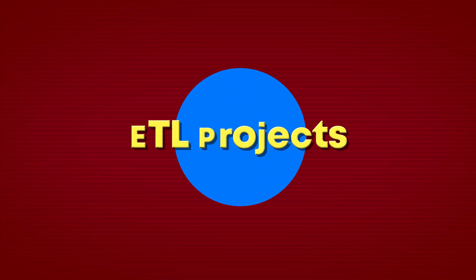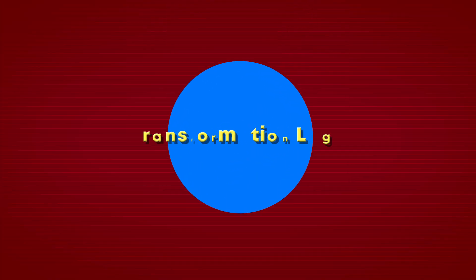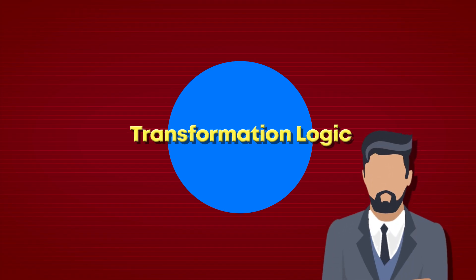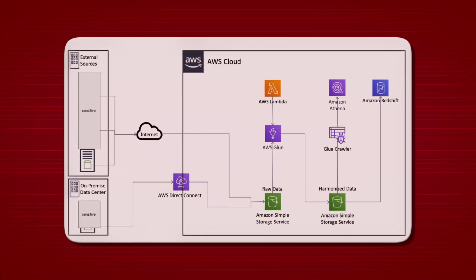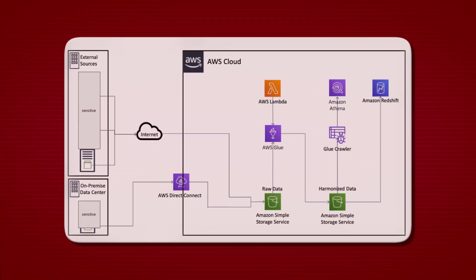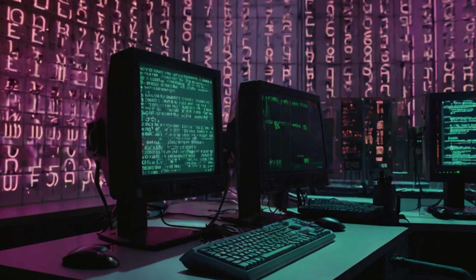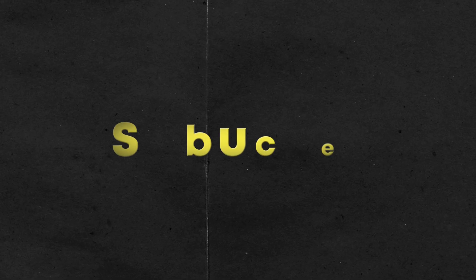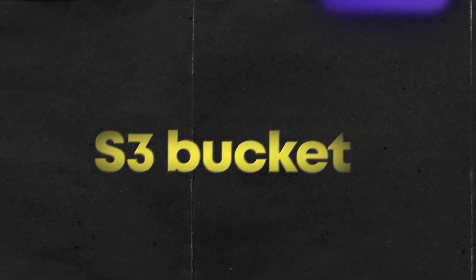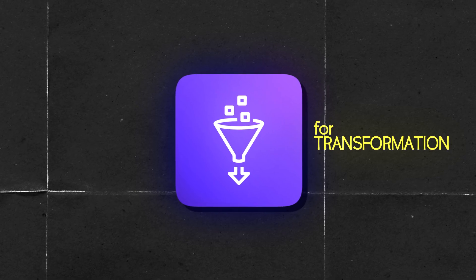Other than this, I worked on a lot of ETL projects where clients wanted to write transformation logic as per business requirements. As you can see in this architecture, we have data coming from on-premise via AWS Direct Connect, which is a dedicated service for data transfer, and other sources are APIs. We get all of this raw data and load it onto an S3 bucket.